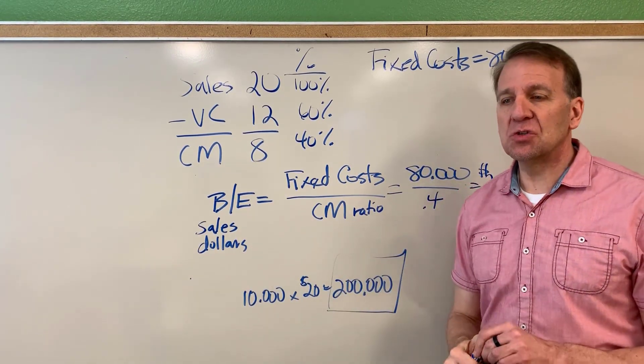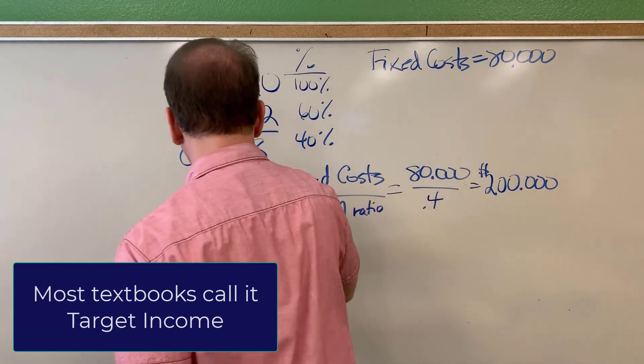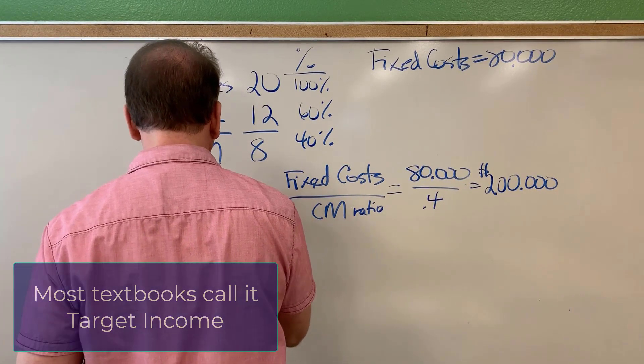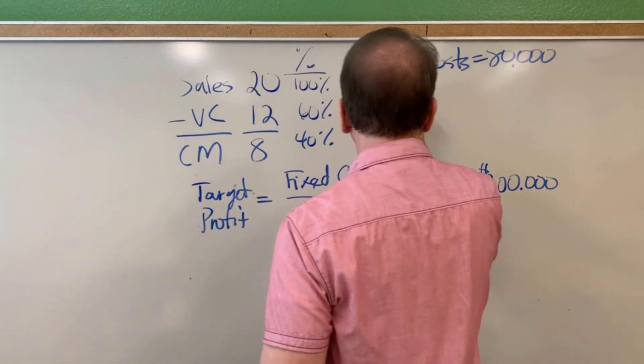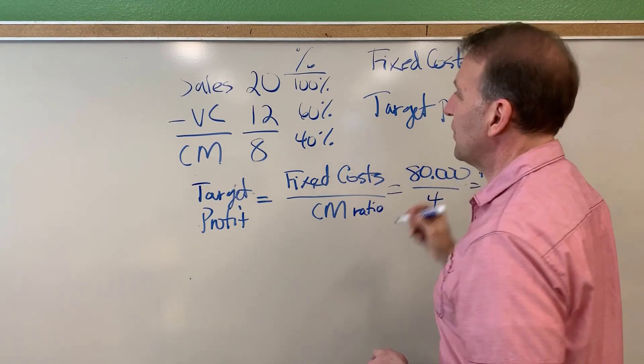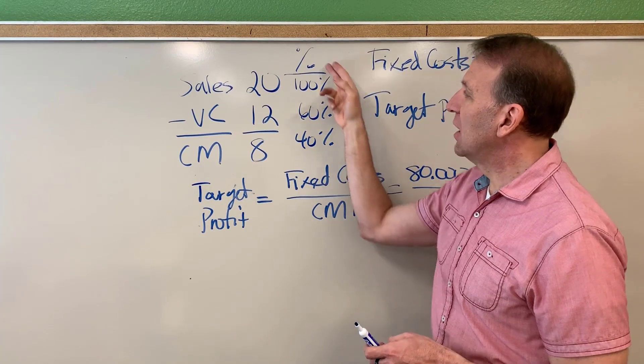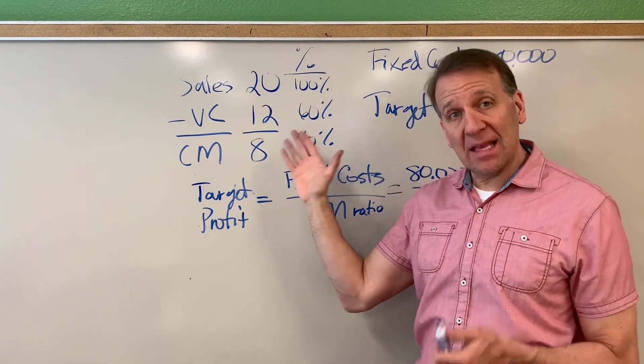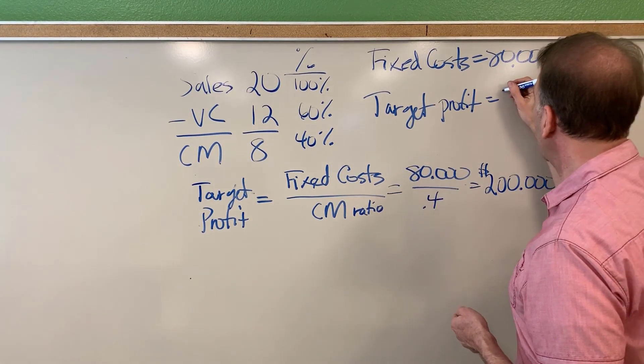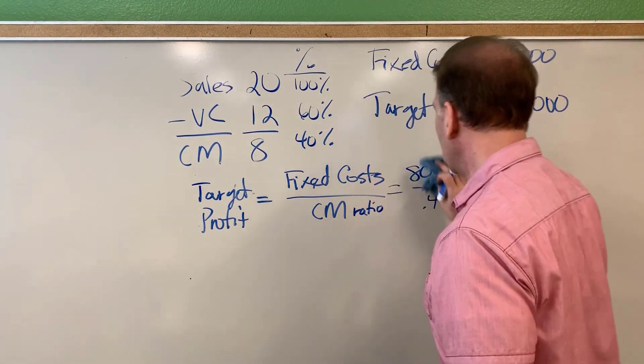Let's move on to target profit, or sometimes they call it target income in the textbooks. When you're doing homework problems, there are certain things that need to be given. They need to give you enough information when you're doing break even and target profit calculations. You need to know what the fixed costs are. And if you're calculating a target profit, you need to know what the target profit is. In our example here, our target profit will be $40,000.